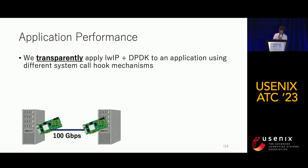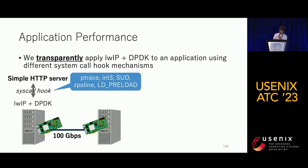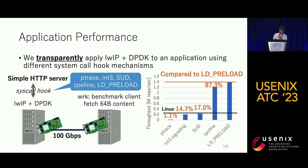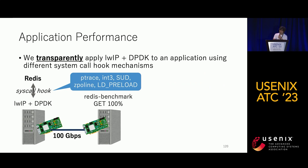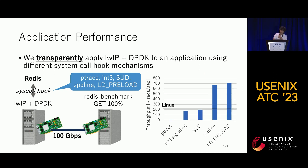We transparently applied AWP plus DPDK to existing applications using different system call mechanisms. With a simple HTTP server and AWP plus DPDK, running a benchmark using wrk that fetches 64 bytes of static content, Zeppelin keeps the throughput up to 87 percent compared to the LD_PRELOAD case, while ptrace, signaling, and SUD cause significant performance reduction. We ran the same test using Redis, a popular key-value store, and observed a similar trend — Zeppelin keeps throughput up to 94 percent compared to LD_PRELOAD.